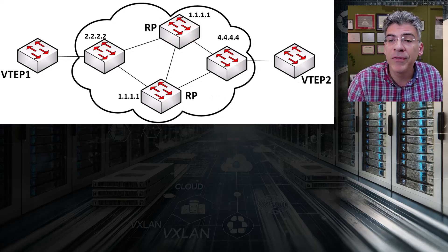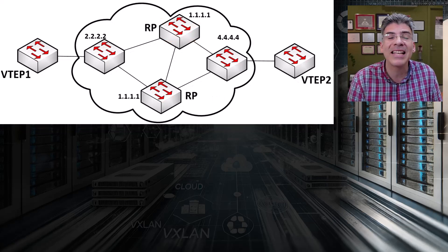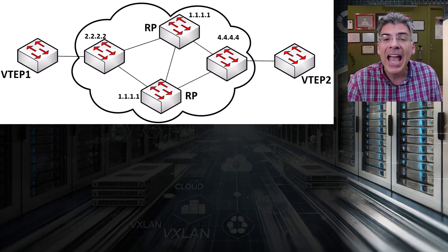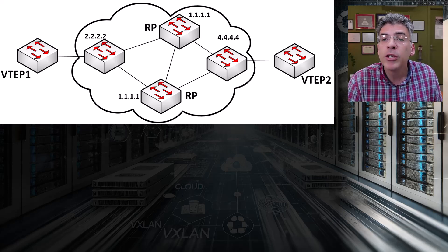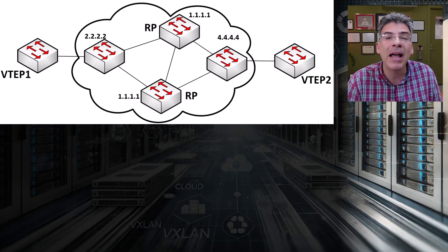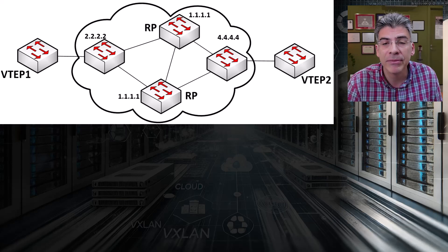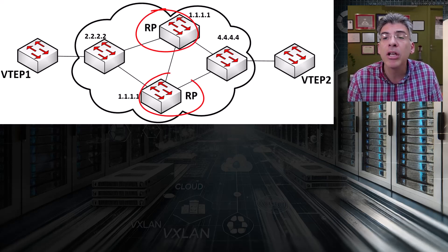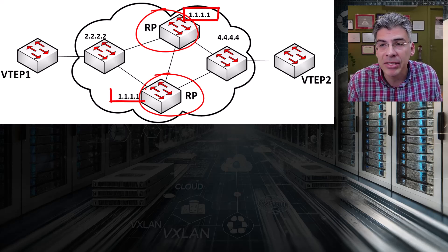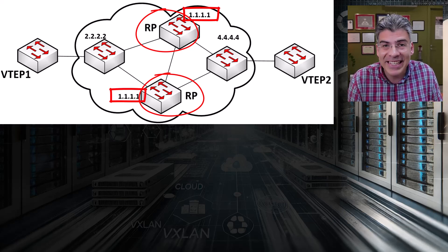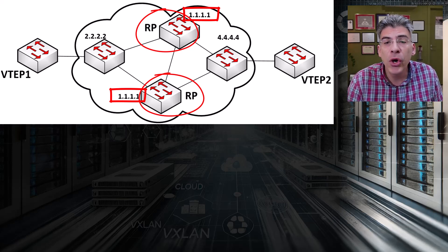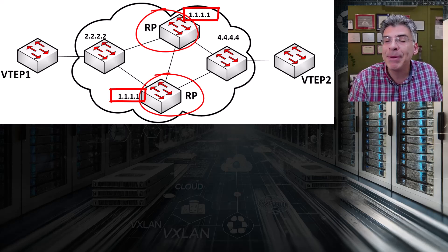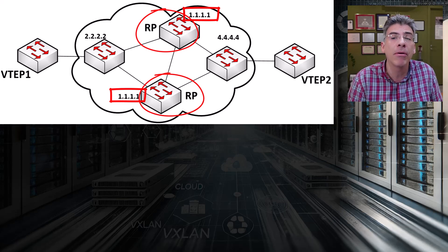The most appropriate approach for VXLAN when using multicast is to use an Anycast RP solution. Anycast RP is a technique used in PIM sparse mode to provide redundancy and load balancing for the rendezvous point. In this configuration, multiple RPs are configured with the same IP address — yes, the same IP address. This address is known as the Anycast IP address that's assigned to the RP.